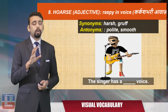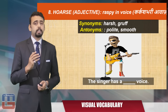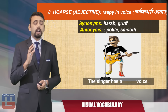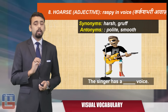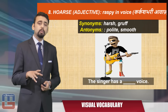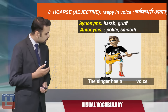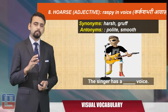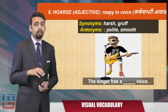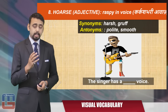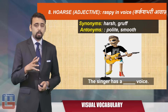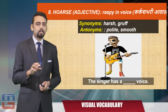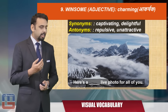The next word is 'horse,' an adjective meaning raspy in voice. The synonyms are 'harsh' or 'gruff,' and the antonyms are 'polite' or 'smooth.' Here's an image of a singer. The sentence becomes: 'The singer has a horse voice' — meaning his voice is horse, it's not that he has a horse in his voice.